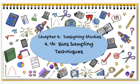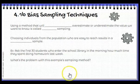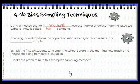In 4.1 part B we're looking at biased sampling techniques. Using a method that will consistently overestimate or underestimate the value that we want to know is called bias sampling. You've heard the word bias in everyday language, but we don't want our sample to be biased, so we have to look at what makes it biased.